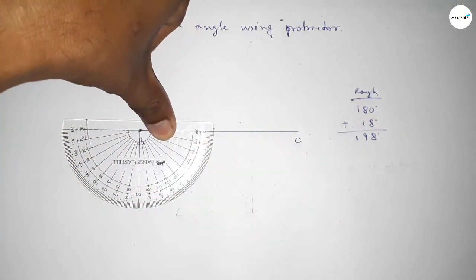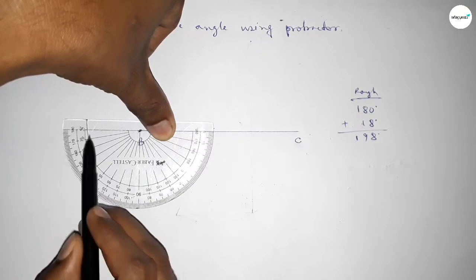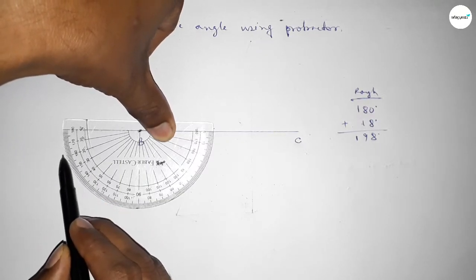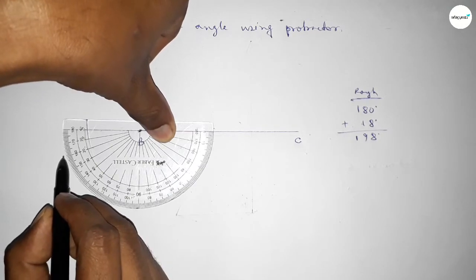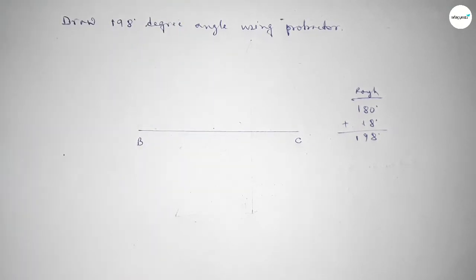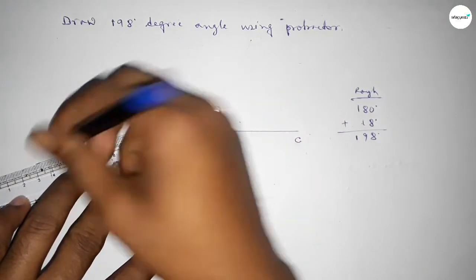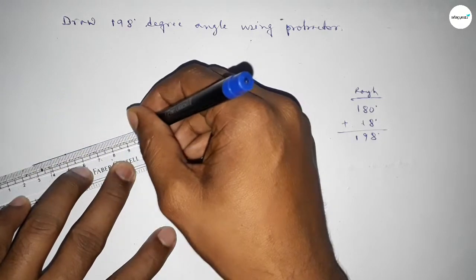So here this is 180 degree angle and this is also 0 degree, 10, 15, 16, 17, 18. So by adding extra 18 degree angle with 180 degrees, then we can get 198 degree angle. Now joining this side to get 198 degree angle.